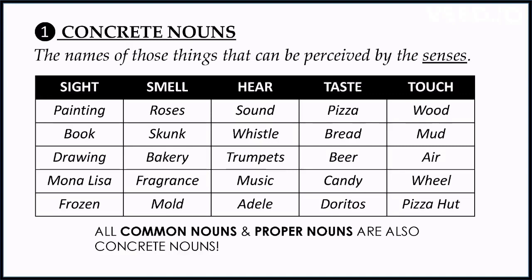We human beings can sense things, people, and qualities. Human beings have a total of five senses: we can see, smell, hear, taste, and touch. For sight, we can see a painting, a book, a drawing. The Mona Lisa painting is an example. The word 'Frozen' — the name of a film — is a concrete noun because we can sense it.